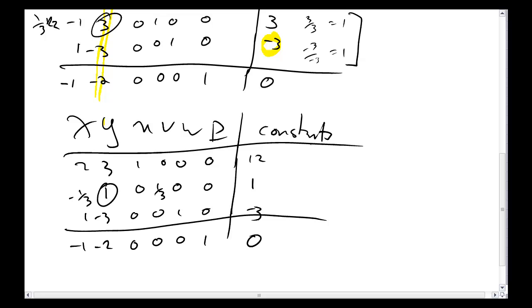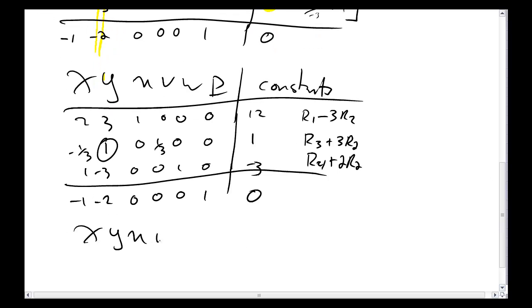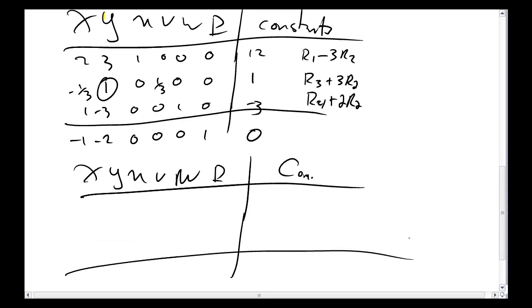Now it's time to continue pivoting around this element. I need to do row 1, minus 3, row 2. I need to do row 3, plus 3, row 2. And I need to do row 4, plus 2, row 2. Get all my pivoting done. So I'm going to have x, y, u, v, w, p, constants. This middle row is not going to change. Negative 1 third, 1, 0, 1 third, 0, 0, 1. Row 1 minus 3, row 2 gives me 2. Minus minus gives me plus. 3 over 3 is 1, so that leaves me with 3. 3 minus 3 gives me 0. 1 minus 3 times 0 leaves me with 1. 0 minus 3 over 3 is 0, and that gives me negative 1. 0, 0, 12 minus 3 leaves me with 9.